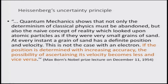Max Born is the person who basically gave the physical meaning of psi — he gave the idea that |psi|² represents the probability. His interpretation is very important. Quantum mechanics shows that not only must the determinism of classical physics be abandoned, but also the naive concept of reality which looked upon atomic particles as if they were very small grains of sand. At every instance a grain of sand has a definite position and velocity; this is not the case with an electron. If position is determined with increasing accuracy, the possibility of ascertaining its velocity becomes less and less, and vice versa. We have to be very careful when talking about determinism, which is the determined final result of computation.